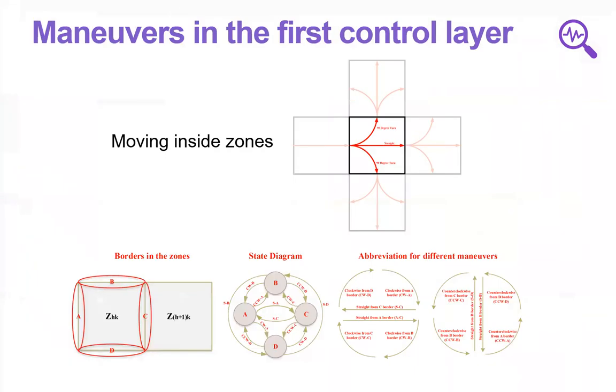And here also implemented this state diagram for transition between zones for AGVs.